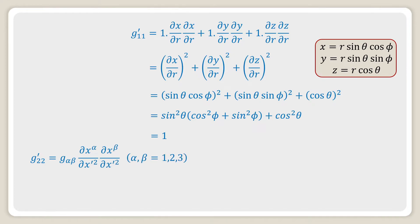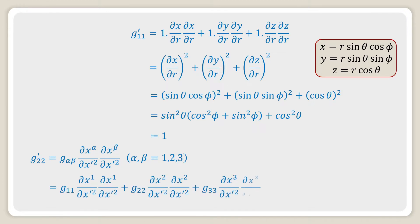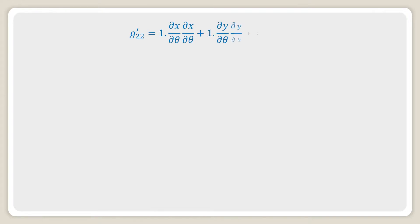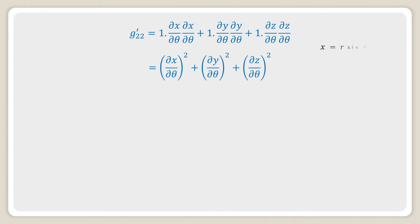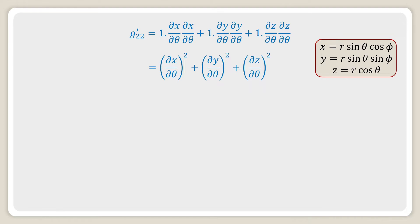Now g'₂₂ = g_αβ (∂x^α/∂x'²)(∂x^β/∂x'²), where α and β go from 1 to 3. This equals g₁₁(∂x/∂θ)² + g₂₂(∂y/∂θ)² + g₃₃(∂z/∂θ)², giving (∂x/∂θ)² + (∂y/∂θ)² + (∂z/∂θ)².